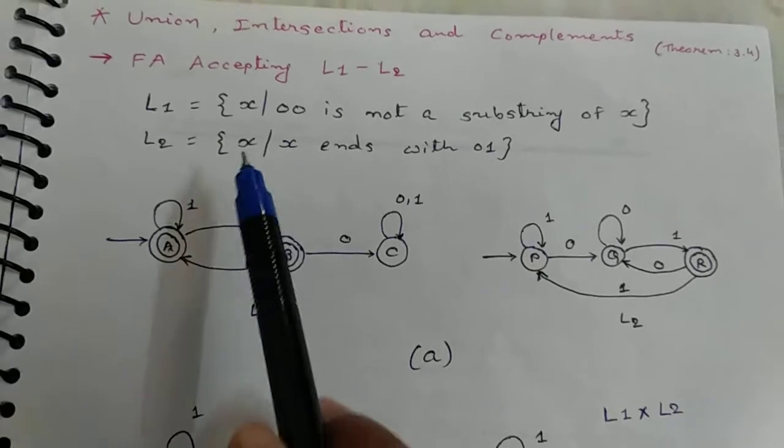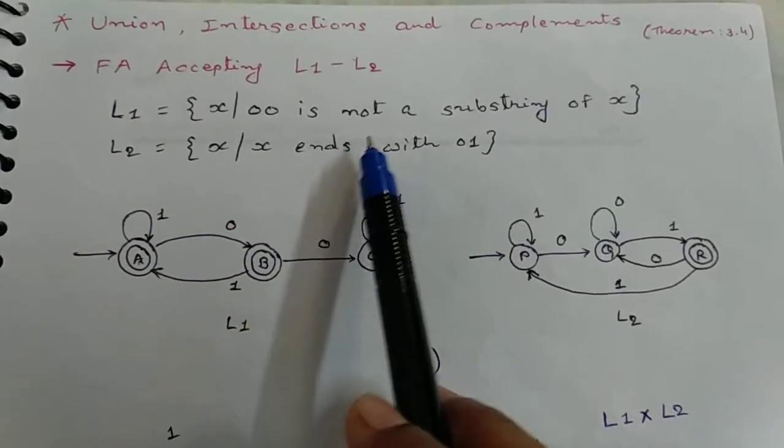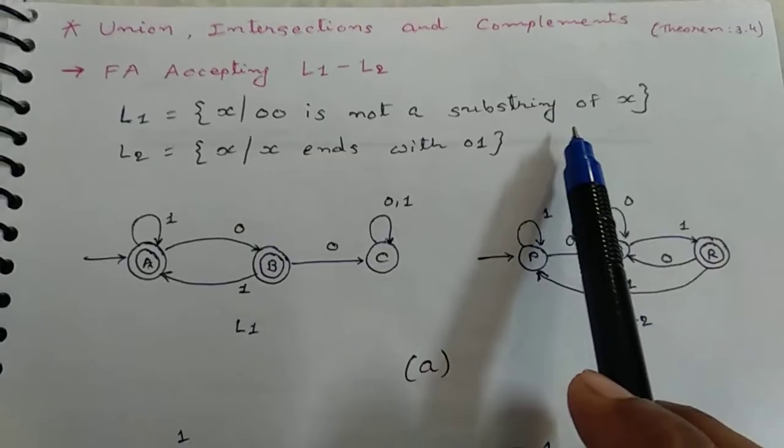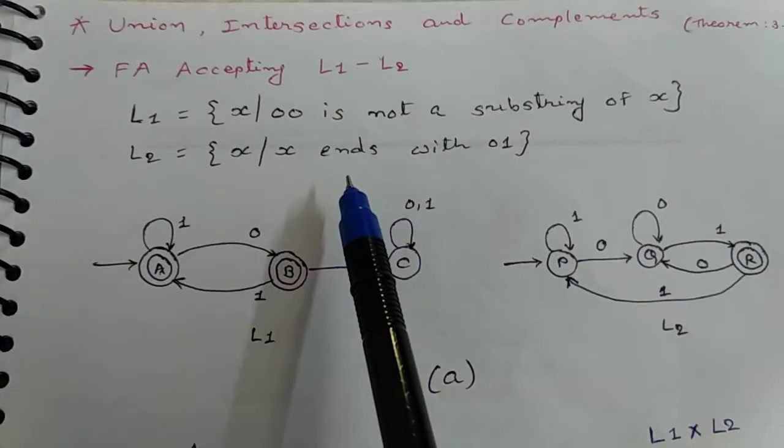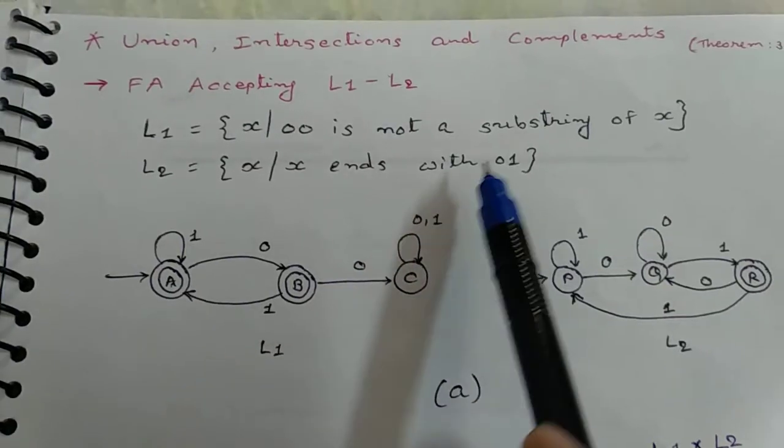L1 is equal to X where 00 is not a substring of X, and L2 equal to X where X ends with 01.